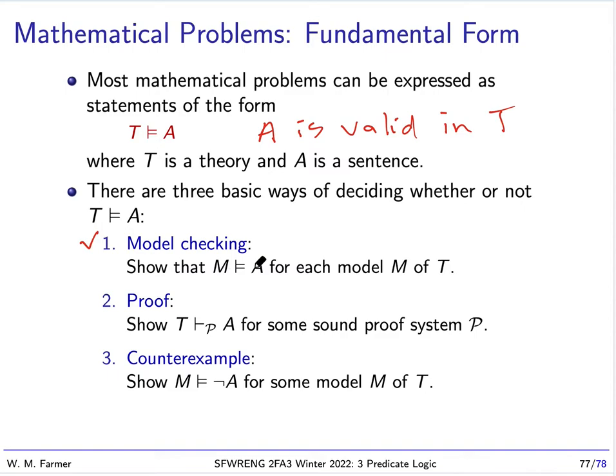So, what we have to do with model checking is we check that if we have a model of T, that A will be valid in that model. Or, in other words, that model will be a model of A. So, we verify for each model of T, that model is a model of A. And this means we've got to basically check every model.